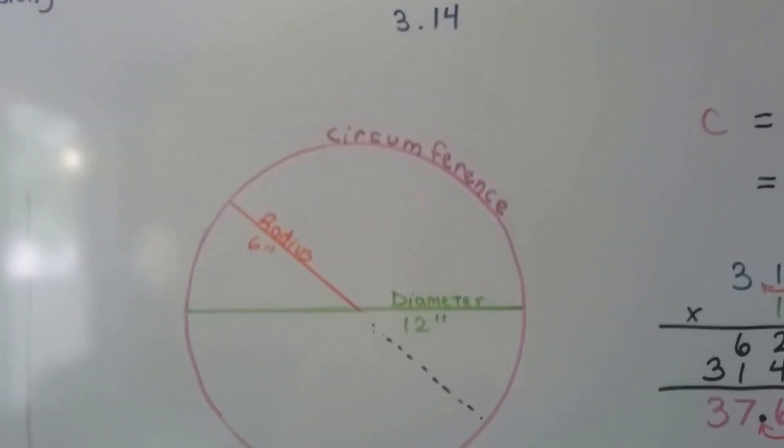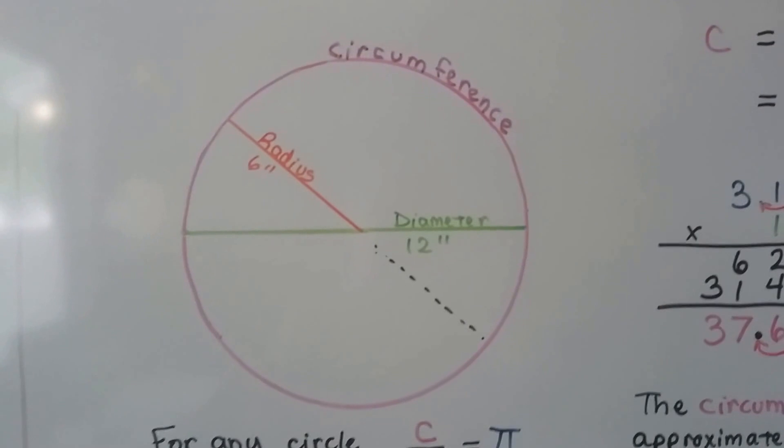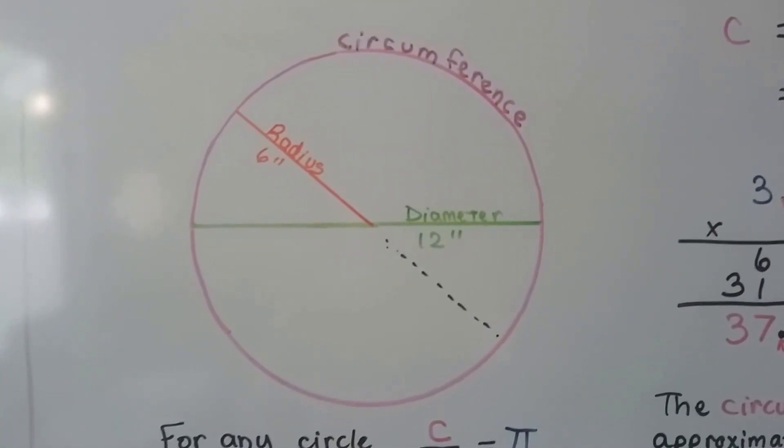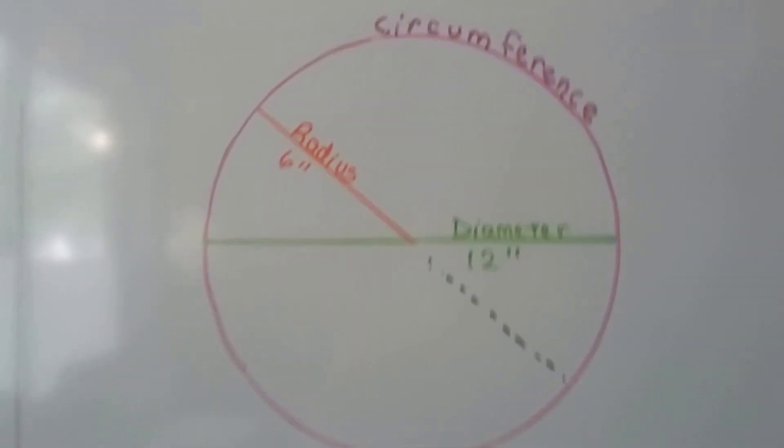So here's the circle that we've been dealing with. We've got our pink circumference, we've got our green diameter, and we've got our orange radius.